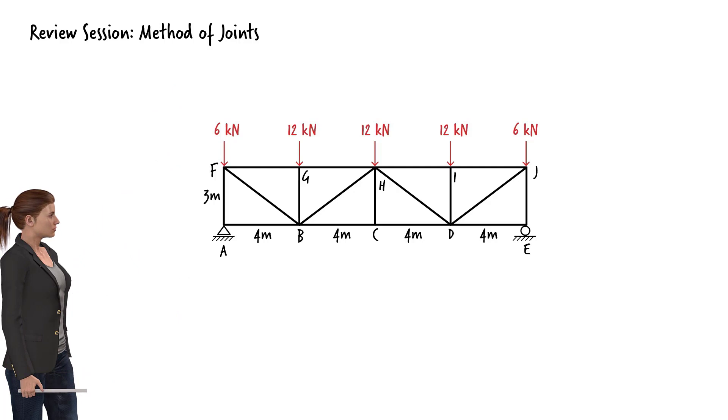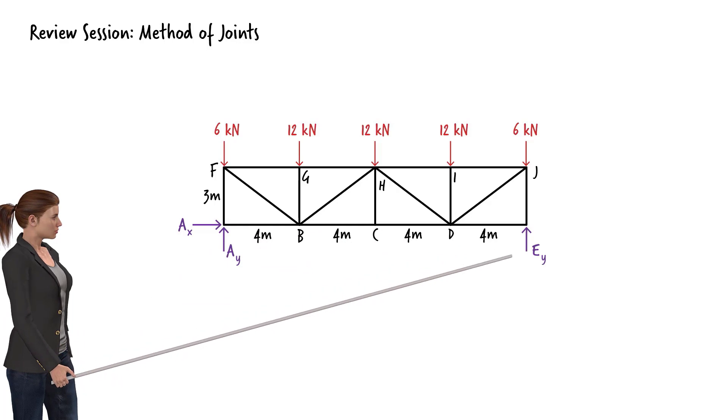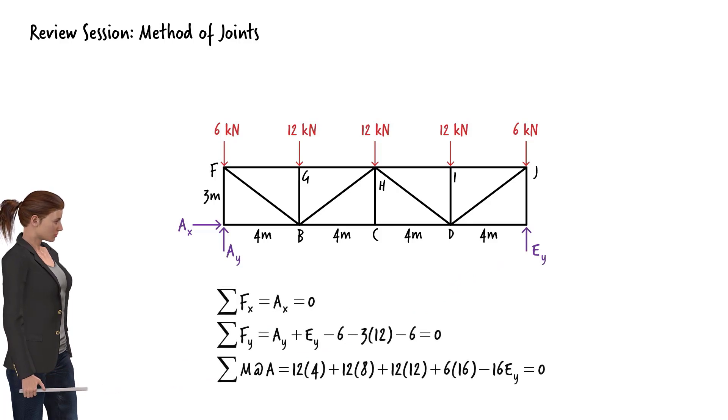We start by calculating the support reactions. Let's draw the free body diagram for the entire truss. There are two support reactions at the pin support at A, and one support reaction at the roller support at E. So we can easily calculate the reaction forces using the static equilibrium equations.